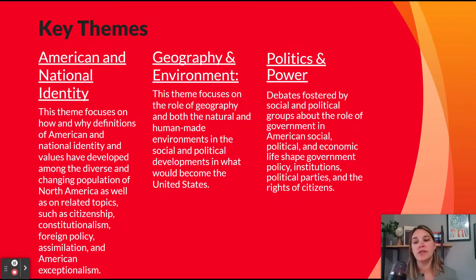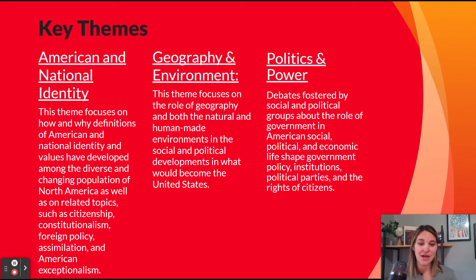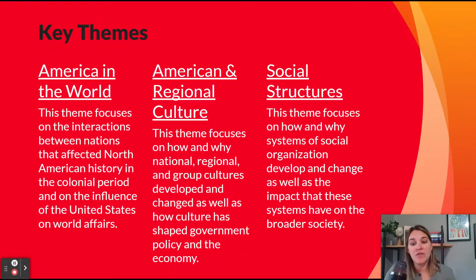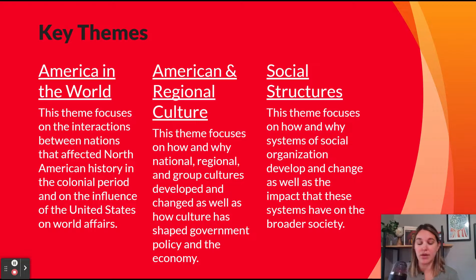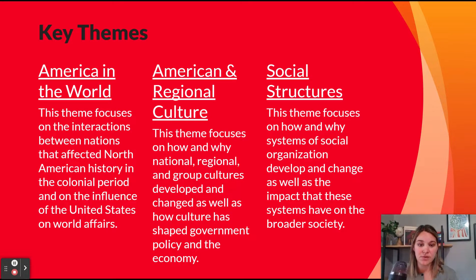Key themes to think about include American and national identity; how the environment and geography were involved in this time, especially westward expansion; politics and power — focusing on the various political parties that developed, the issue of secession, and the role of government in reconstruction; America in the world, including the Mexican-American War and increased trade opportunities with other nations; American and regional culture, thinking about the differences between North and South; and social structures — really thinking about the system of slavery and how it changed in the period.